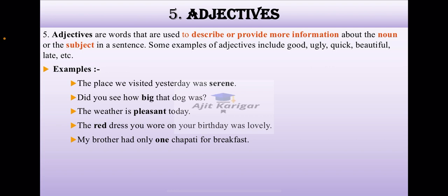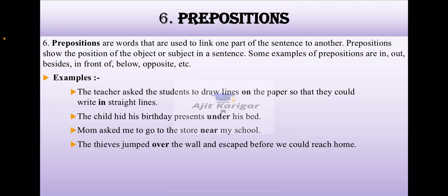The next part of speech is preposition. Prepositions are words that are used to link one part of the sentence to another. Prepositions show the positions of the object or subject in a sentence. Prepositions are in, out, beside, in front of, below, opposite, etc. Dear students, these prepositions can be understood in a single word here: pre and positions. These are telling the positions before itself.